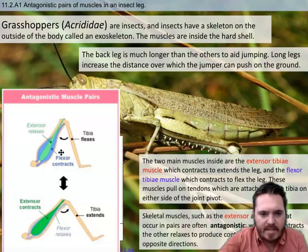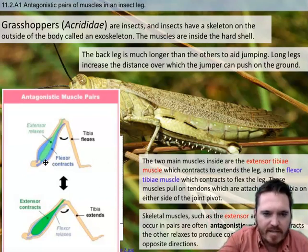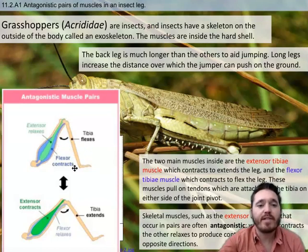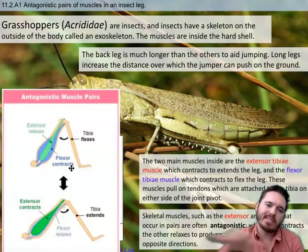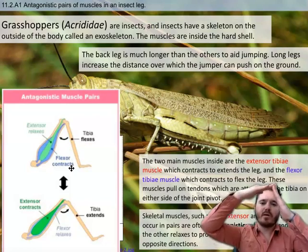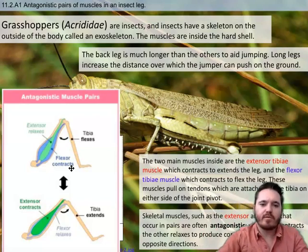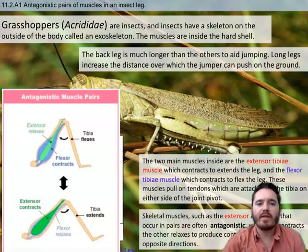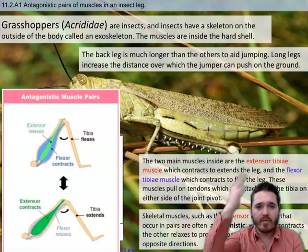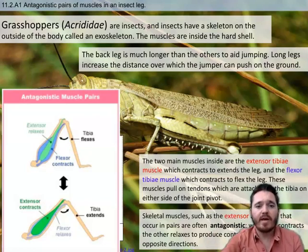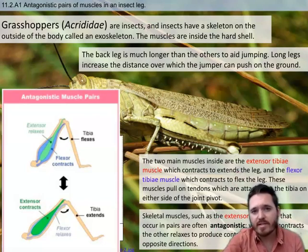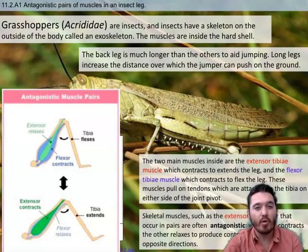Then as the extensor is relaxing in this top part of the diagram, the flexor is what's contracting. That's connected to the inside of the tibia. It's going to pull the tibia in and move it down. We have antagonistic pairs of muscles as well throughout our bodies to help us move and they are not anchored to our exoskeletons because we don't have exoskeletons, but they are anchored to our bones.